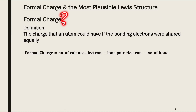So what is formal charge? Formal charge is the charge that an atom could have if the bonding electrons were shared equally. The formula for formal charge is: number of valence electrons minus the lone pair electrons, minus the number of bonds.